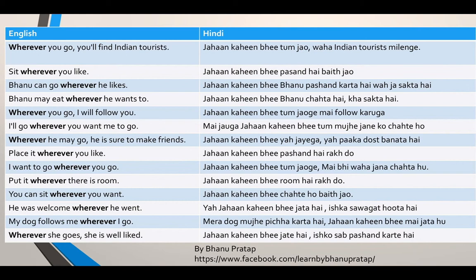Bhanu can go wherever he likes. 'Can' means 'sakna', 'go' means 'jana', 'wherever' is 'jaha kahi bhi', 'like' means 'pasand karna', 'he' means 'wah'. So 'Bhanu can go wherever he likes' means 'jaha kahi bhi Bhanu pasand karta hai, woh ja sakta hai'.